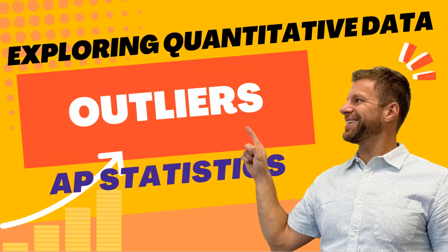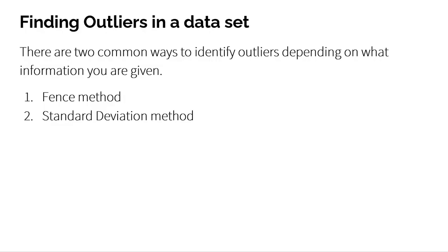Welcome to AP Statistics. In this video, we're going to explore quantitative data by looking at how to identify outliers. We don't really want to just use our eyes and say, oh, that looks like a high value or a low value. We want to actually have ways to mathematically determine yes or no, we have an outlier. There are two accepted methods to identifying outliers.